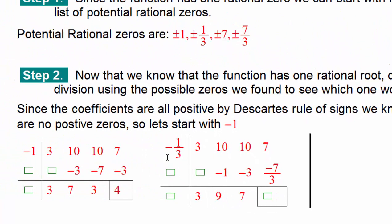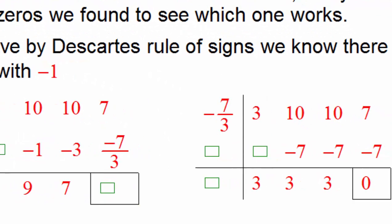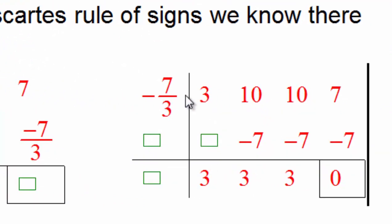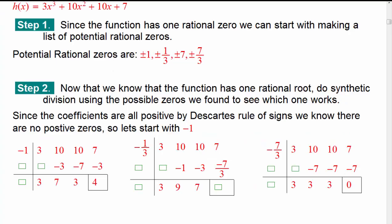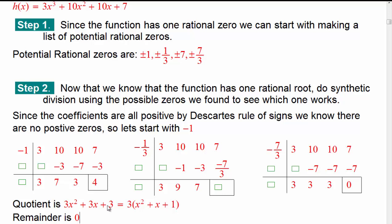Since I can already see that negative 7 won't work (negative 7 times 3 is negative 21, plus 10 is negative 11, times negative 7 is 77 — way out of the question), let's try negative 7 thirds. Negative 7 thirds times 3 gives negative 7. 10 minus 7 is 3. 3 times negative 7 thirds is another negative 7. Add them to get 3. Then negative 7 plus 7 gives you 0 — so negative 7 thirds is our zero!